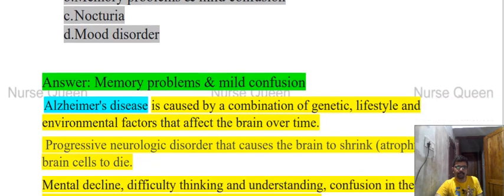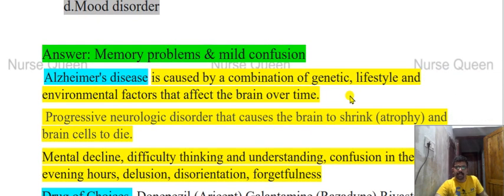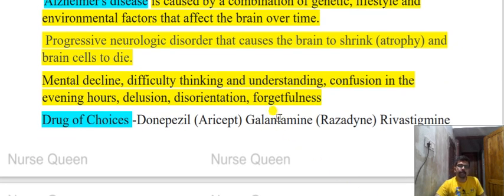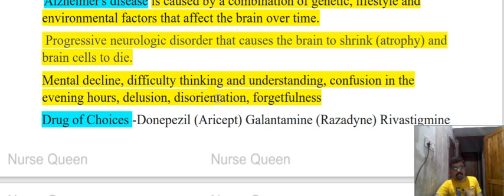Alzheimer's disease is caused by a combination of genetic, lifestyle, and environmental factors that affect the brain over time. It is a slowly progressive neurological disorder that causes the brain to shrink and brain cells to die. Symptoms include memory decline, difficulty thinking, confusion in the evening hours — known as sundowning syndrome — delusion, disorientation, and forgetfulness. Sundowning syndrome with confusion in the evening hours is a main symptom of dementia.